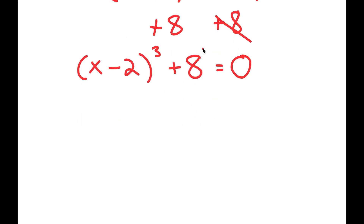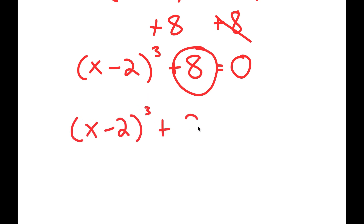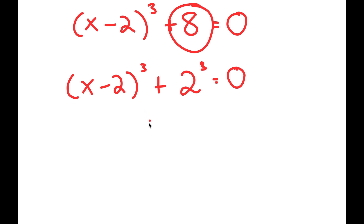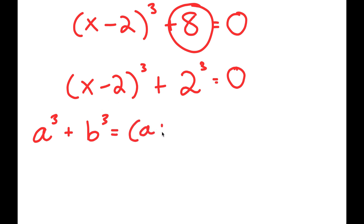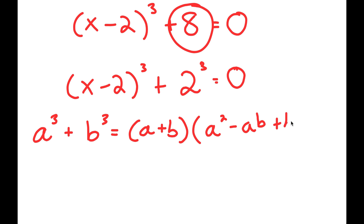Now from here, I can rewrite 8 as 2 to the power of 3. So I have x minus 2 to the power of 3 plus 2 to the power of 3 equals 0. The reason I did that is because if I have something in the form a to the power of 3 plus b to the power of 3, this is equal to a plus b times a squared minus ab plus b squared.